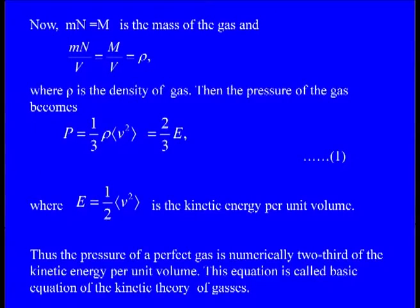Let me write down this equation in another form. Small m times capital M equals small n·m times capital N equals capital M, which is the mass of the gas. So that is nothing but M/V, which gives you rho, where rho is the density of the gas.